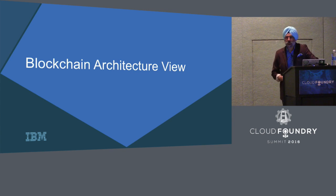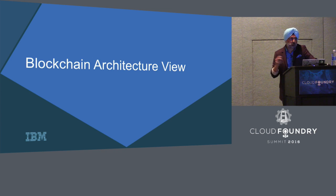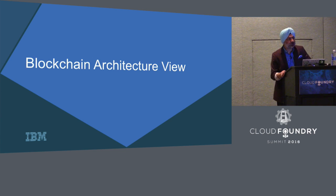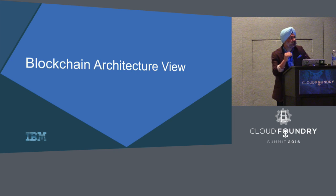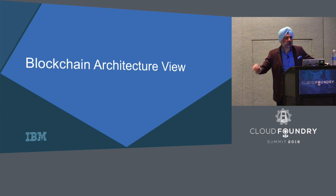One key word: once you get deeper into blockchain, the transaction saved in the blockchain database is immutable. This is different from typical databases where you can do a delete. In decentralized ledgers, you cannot delete — once something is saved, it is saved for life. So not only does everybody have an identical copy, but what is in it is immutable.